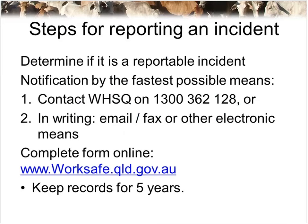Let's go through the steps for reporting notifiable incidents to Workplace Health and Safety Queensland. The owner or manager is required to make the notification immediately after becoming aware that a notifiable incident has occurred, and must keep a record of each notifiable incident for at least five years. A notification must be made by the fastest possible means — usually via a phone call to the infoline on 1300 362 128. You can also notify in writing by email, fax, or other electronic means, or complete a form found online at www.worksafe.qld.gov.au.